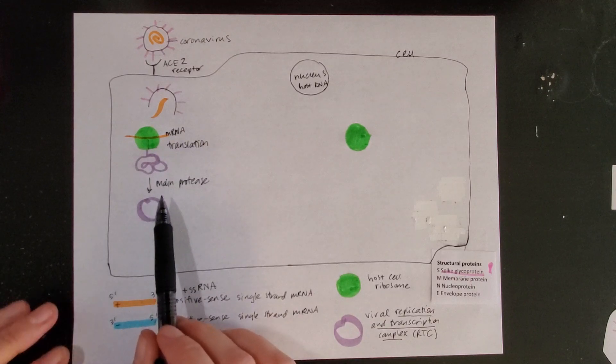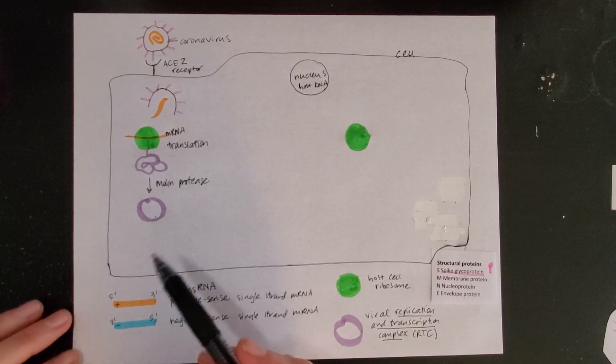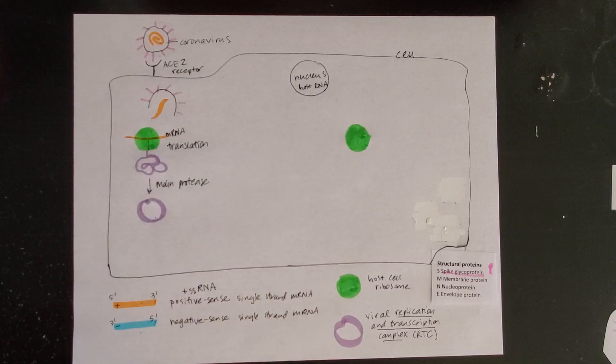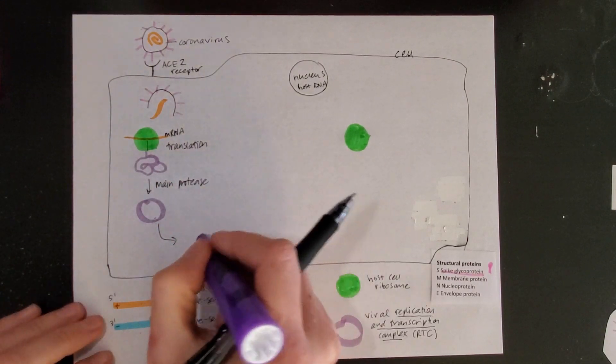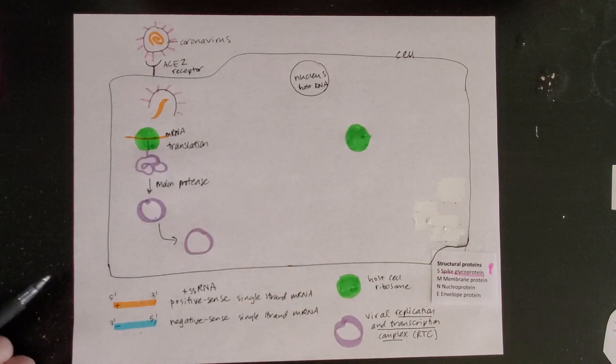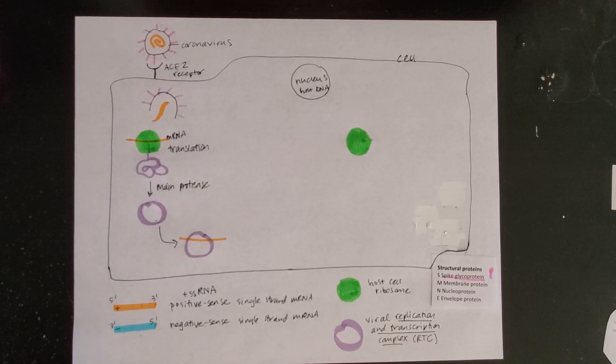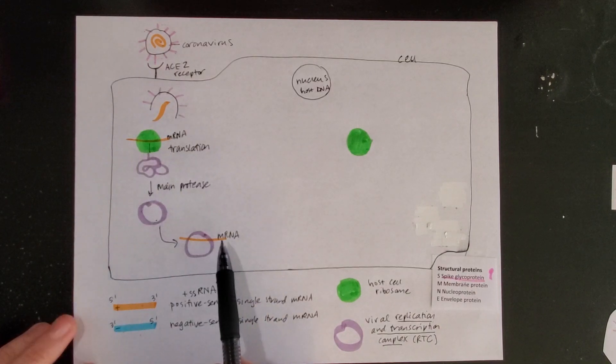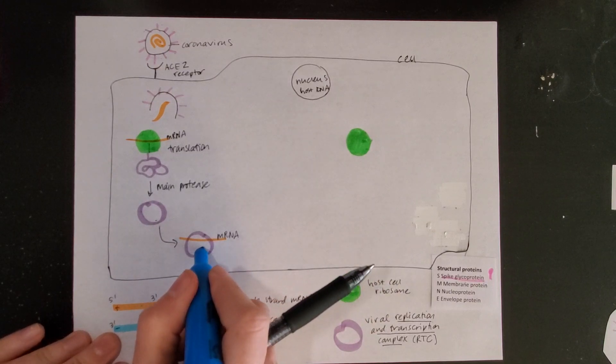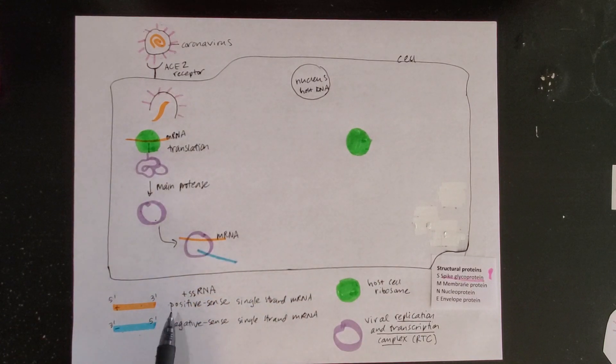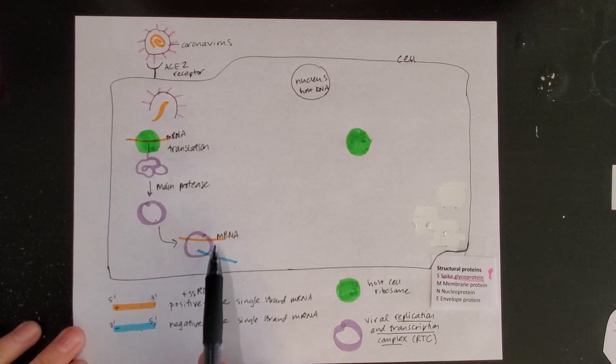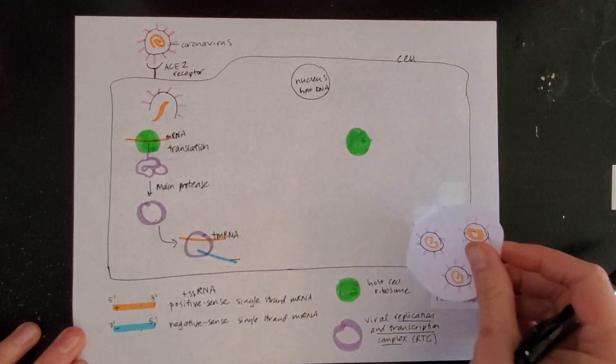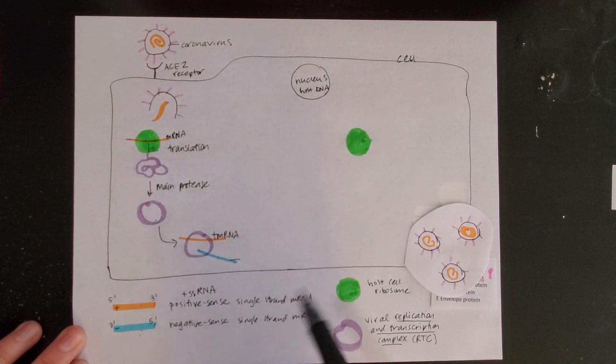This replication and transcription complex is used in a couple of different ways. One of the ways is to make more copies of this viral genome. That replication and transcription complex can be used to run those mRNAs through. Here's that original full mRNA sequence that came out of the coronavirus. It can run through here and produce an identical copy except with the opposite direction. I've taken my positive mRNA and made a negative copy of that genome.